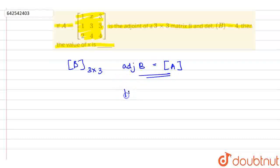And det of B is equal to 4, so this is all given to us.